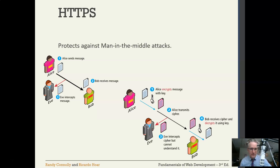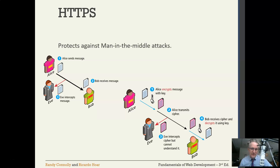The protection against a man-in-the-middle attack is to encrypt the message of some sort, often with a key. This way, if Eve intercepts the encrypted message — or sometimes known as a cipher — she cannot understand it because she doesn't have the key. Of course, the problem is how does Alice also send the key to Bob and have this key not be useful to Eve? That's actually a fairly tricky problem.